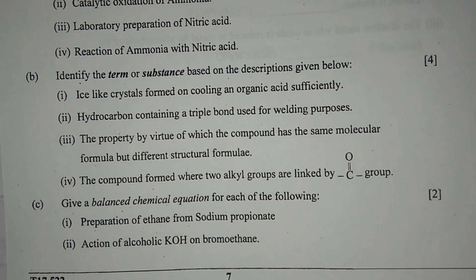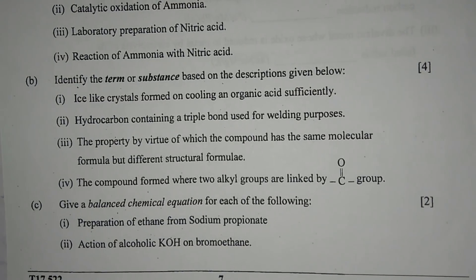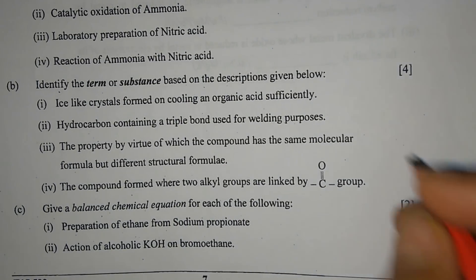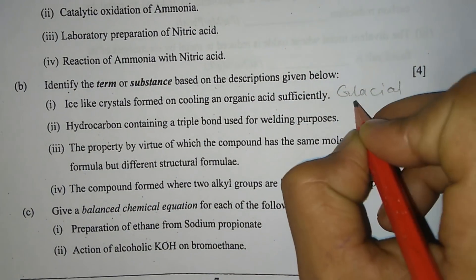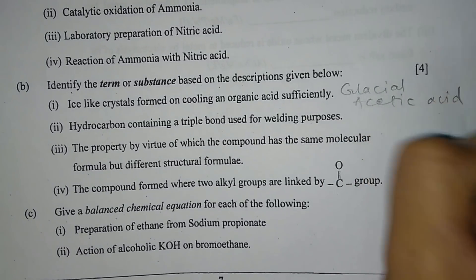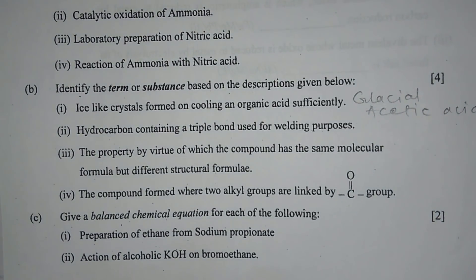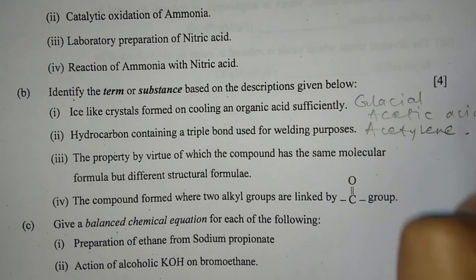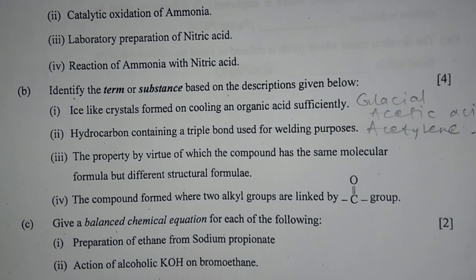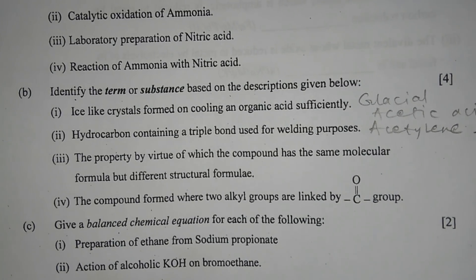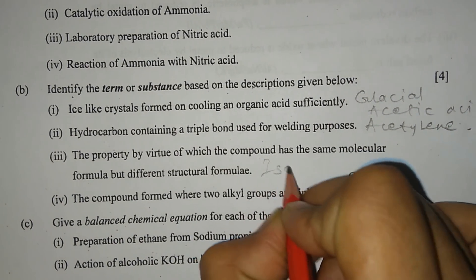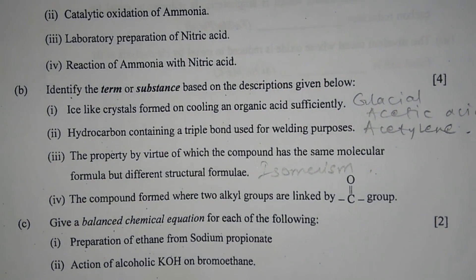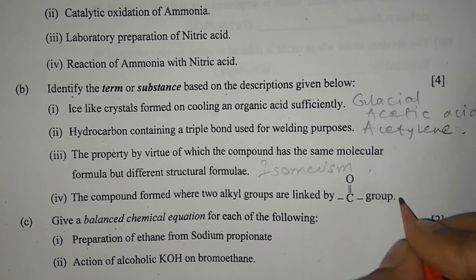Question 6b: identify the term or substance based on the descriptions given. Number 1 — ice-like crystals formed on cooling an organic acid sufficiently: glacial acetic acid. Number 2 — hydrocarbon containing a triple bond used for welding: acetylene. Number 3 — the property by which a compound has the same molecular formula but different structural formula: isomerism. Number 4 — the compound formed when two alkyl groups are linked by a C=O group: ketones.